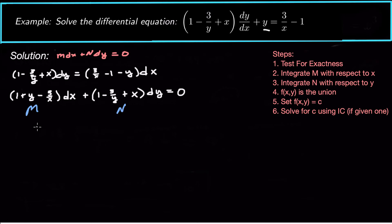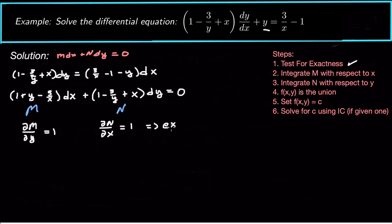Now we need to take the partial derivatives to test for exactness. Partial M partial y equals 1, and partial N partial x is also equal to 1. Since partial M partial y equals partial N partial x, that is our test for exactness — this implies it's an exact equation.